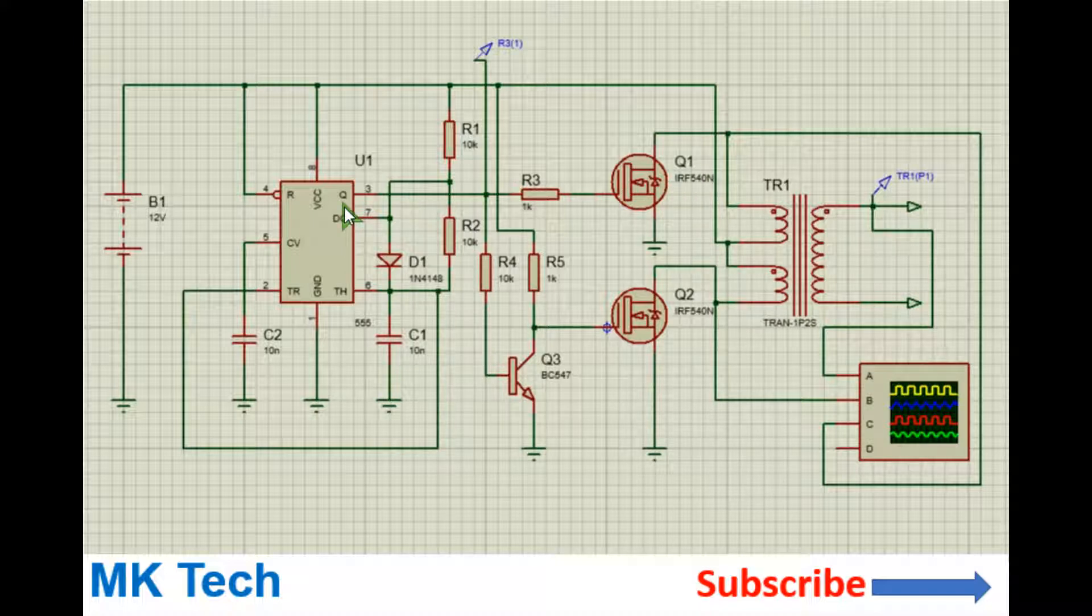So the 555 timer is connected as shown here. Its VCC pin is connected to 12 volts. The reset pin is connected to 12 volts. Ground is to ground. The trigger pin is connected to ground. Here this timing capacitor 10 nanofarads. The control voltage is connected to ground through this 10 nanofarads capacitor as shown here. The discharge pin is connected to pin 2 as well.